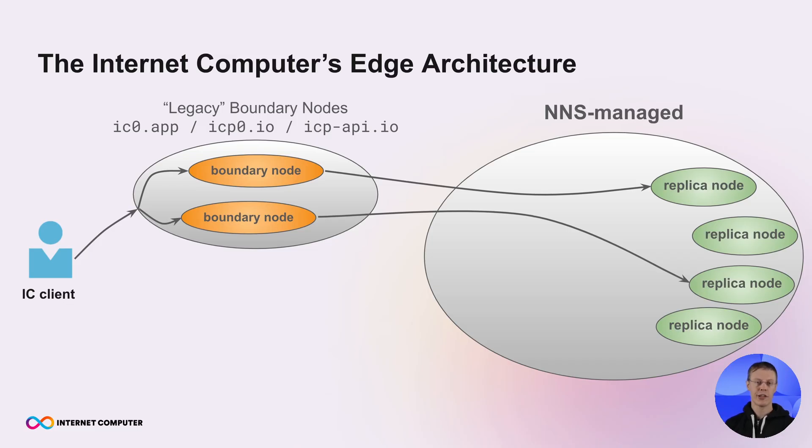To access dApps on the internet computer, until now you had to go through one of the legacy boundary nodes. You might know them by the domain names ic0.app, icp0.io, and icp-api.io.